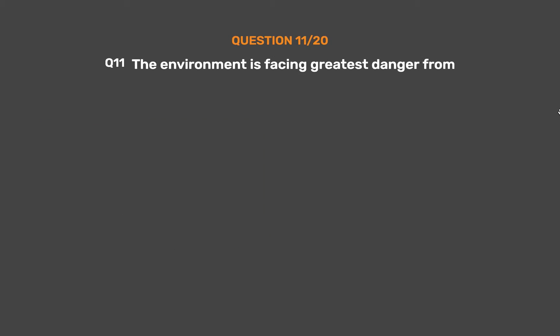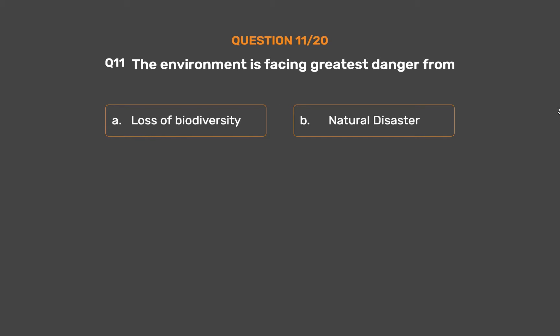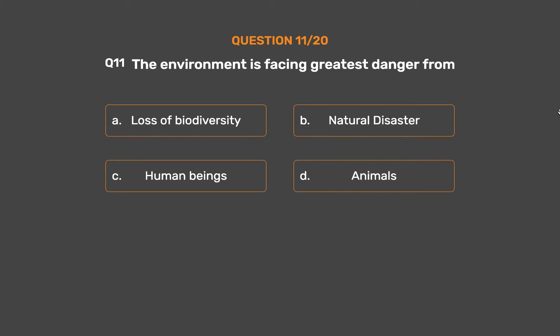Question No. 11. The environment is facing its greatest danger from? Option A: Loss of biodiversity. Option B: Natural disaster. Option C: Human beings. Option D: Animals. The correct answer is Option C: Human beings.